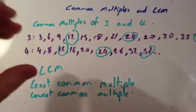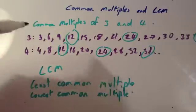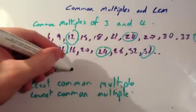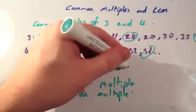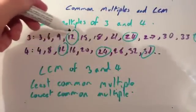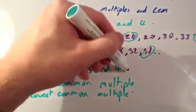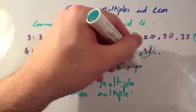So in other words, it's the first common multiple of both numbers. If I wanted the lowest common multiple of 3 and 4, it's the first number that is a common multiple. So that would be 12. The lowest common multiple of 3 and 4 is 12.